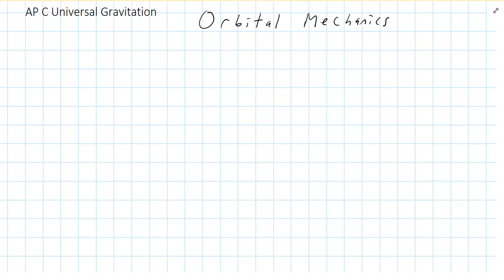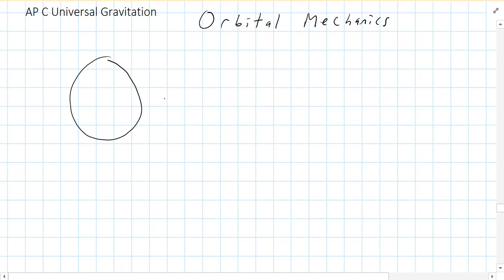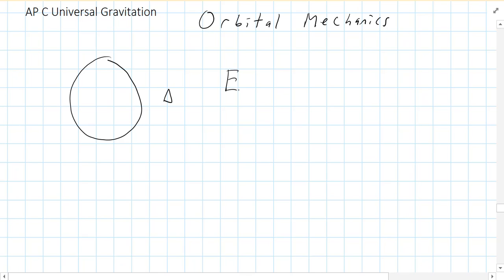When we talk about orbital mechanics, we're usually talking about energy. Let's say you have a planet — it could be Earth — and you have a spacecraft, and you are traveling in your spacecraft near the Earth somewhere. The Earth-spacecraft system can have two types of energy. The total energy is going to be the kinetic energy of the ship plus the potential energy of the ship-planet system.